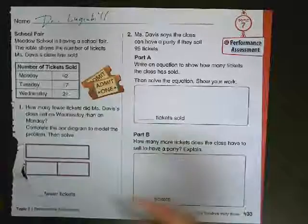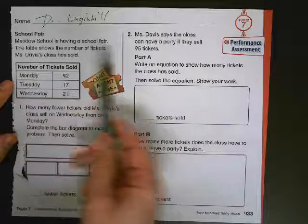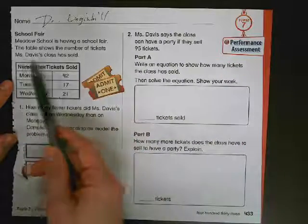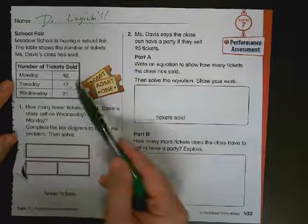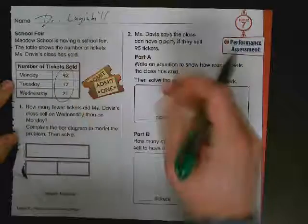So on your assessment, it's going to have a school fair over here. It might not have a school fair, it might have something else. But Meadow School is having a school fair. The table shows the number of tickets Mrs. Davis' class has sold. So Monday 42, Tuesday 17, Wednesday 21.